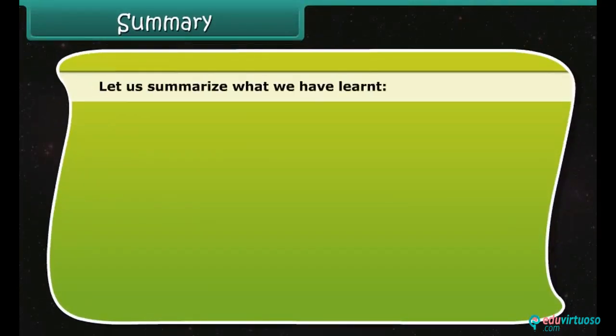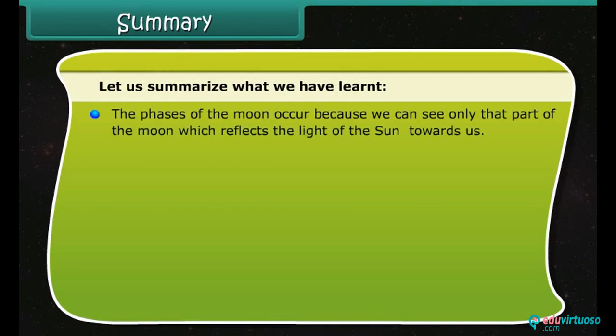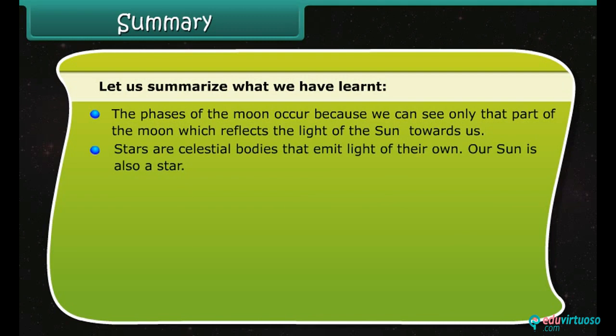Let us summarize what we have learned. The phases of the moon occur because we can see only that part of the moon which reflects the light of the sun towards us. Stars are celestial bodies that emit light of their own. Our sun is also a star. It is convenient to express distances of stars in light years.